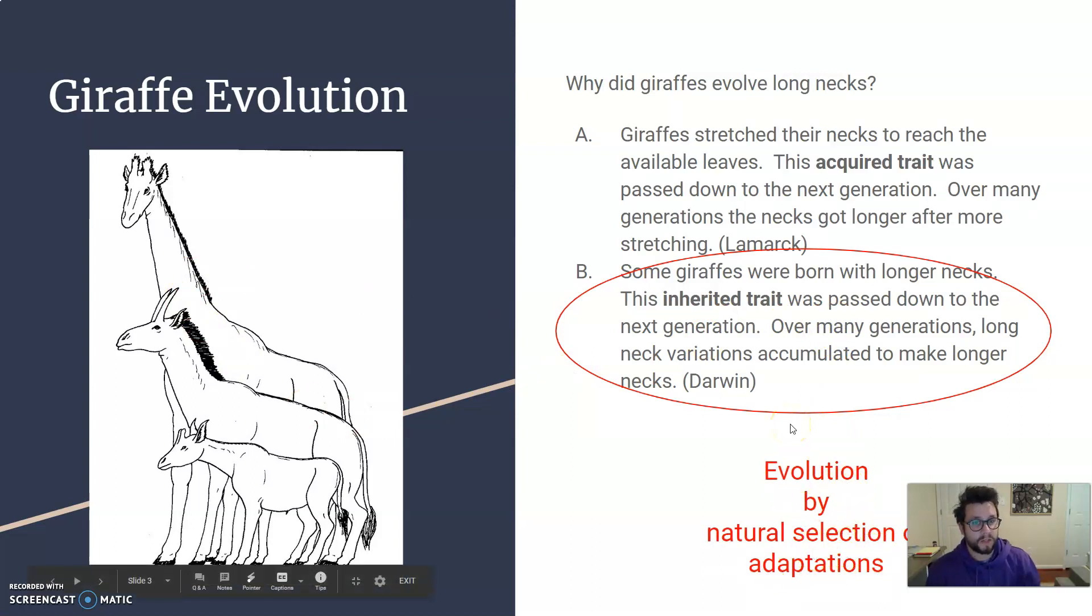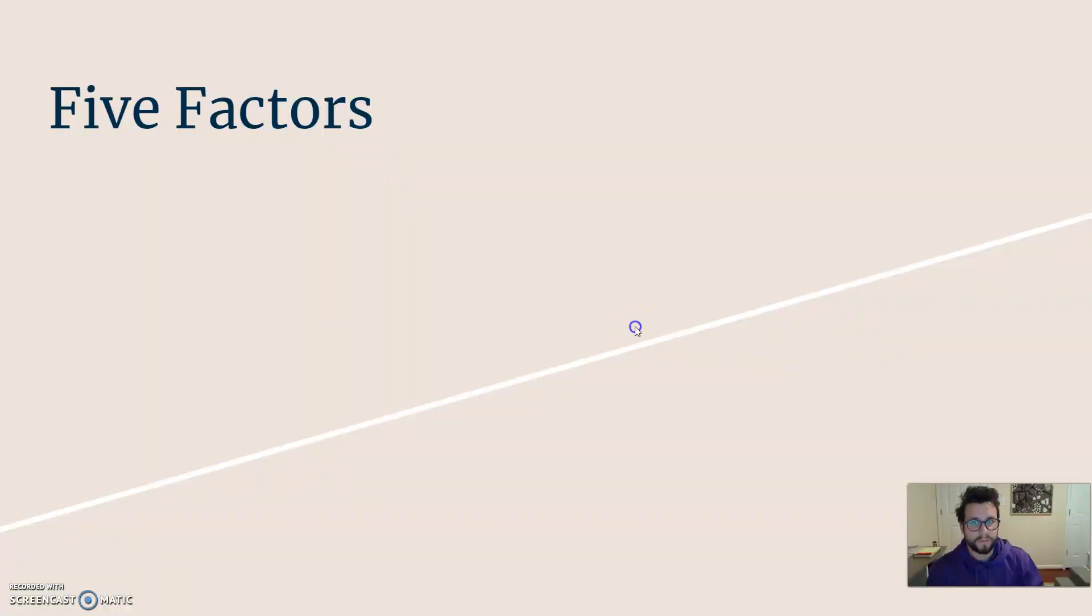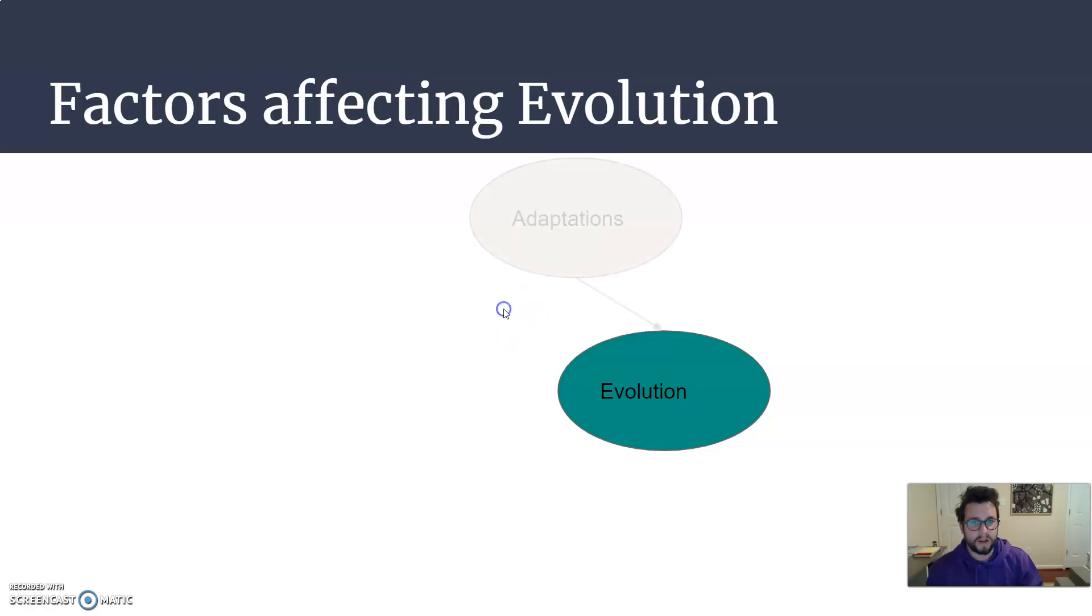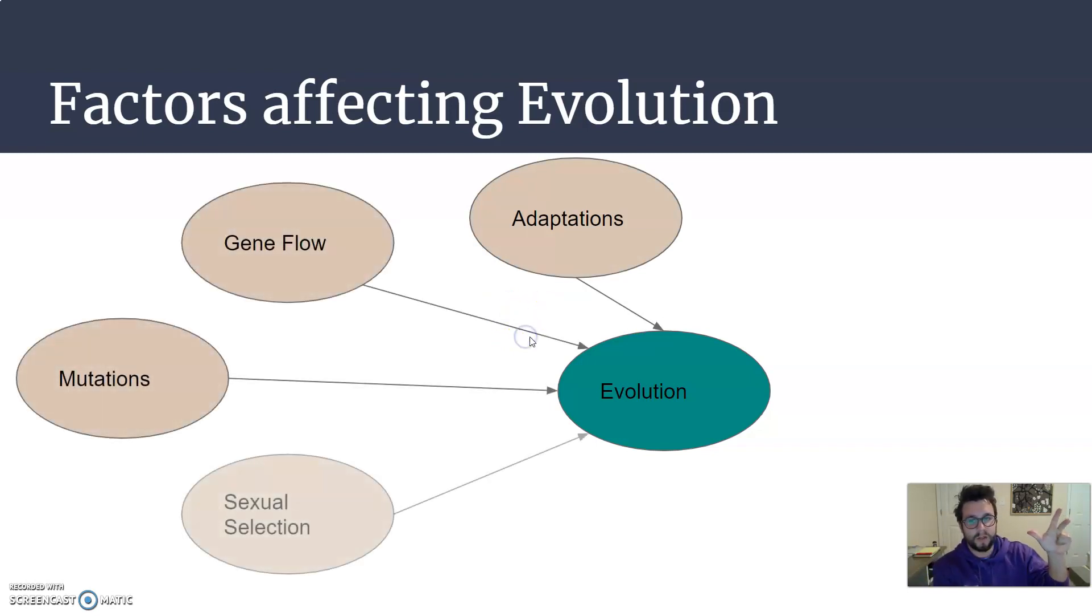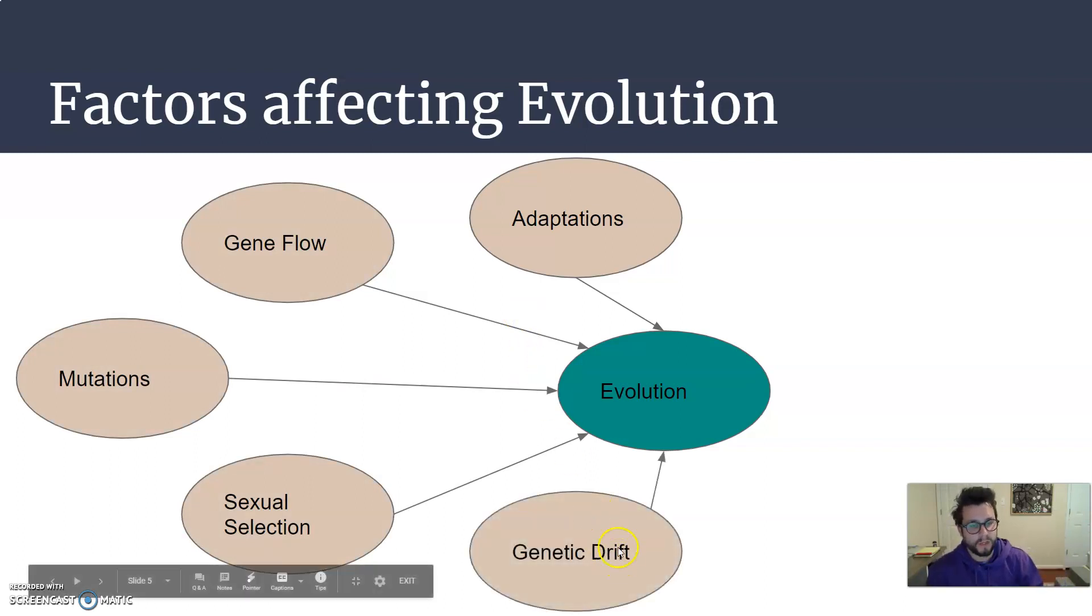So natural selection and adaptations are one very important way that organisms evolve and change, but it's not the only way. So the five factors we're going to look at here are adaptations, gene flow, mutations, sexual selection, and genetic drift. All five of those things can lead to changes in populations over time.